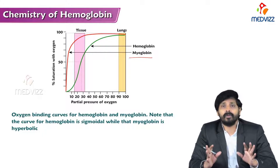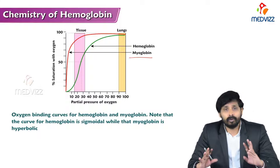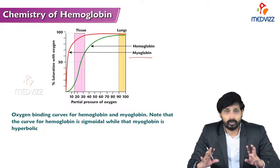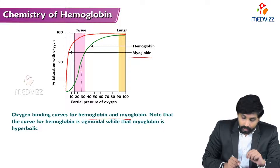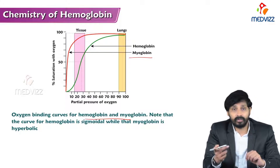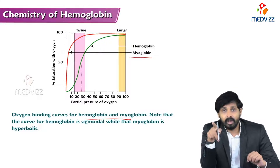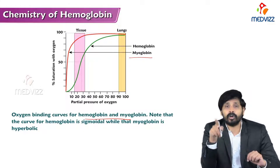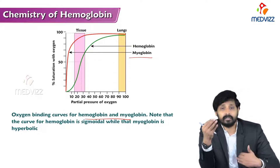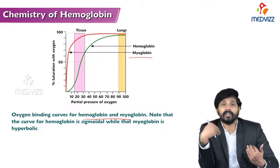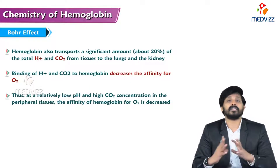In hemoglobin, cooperative binding means when one oxygen binds to the alpha chain, the rest of the chains open up and further oxygen molecules bind, so one hemoglobin molecule carries four oxygen molecules. The oxygen binding curve for hemoglobin is sigmoidal while for myoglobin it is hyperbolic. The sigmoidal curve facilitates more cooperative oxygen binding.